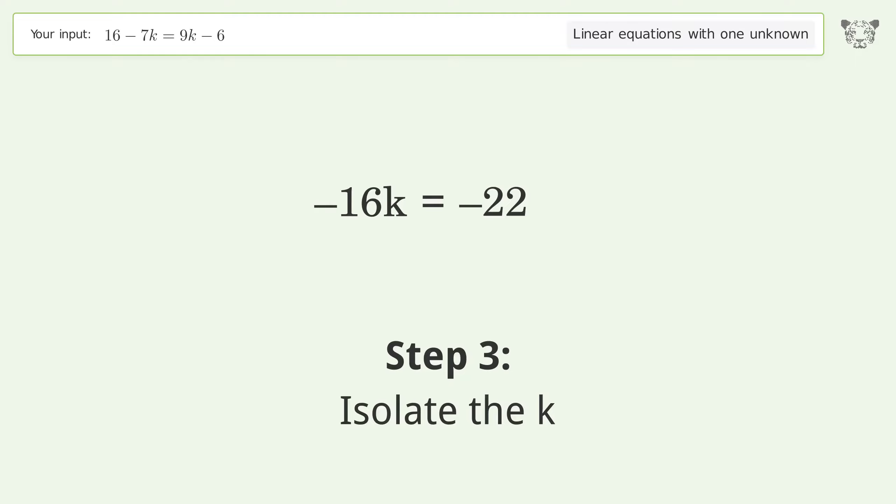Isolate the k. Divide both sides by negative 16. Cancel out the negatives.